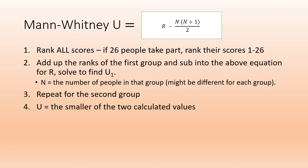Repeat that process for group two, and your final U result is the smaller of the two calculated values. N in that equation is the number of people in that group. It's independent measures for this study, so watch out because the number of people in each group might be different.